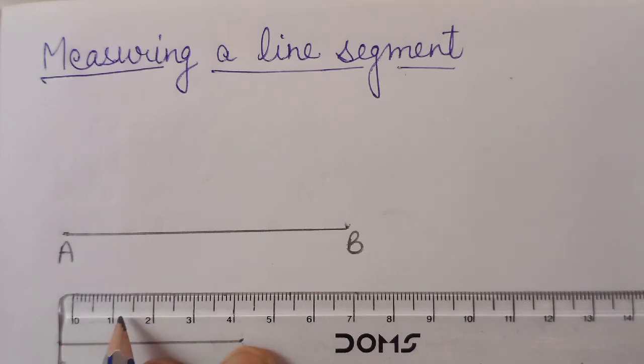And between 0 and 1, this half, this is half of 1. So between 0 and 1, between these two points, there are 10 segments. Let's start.